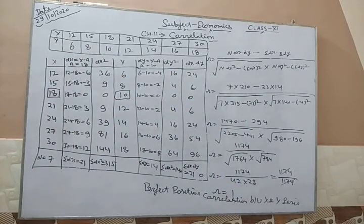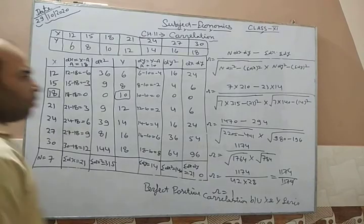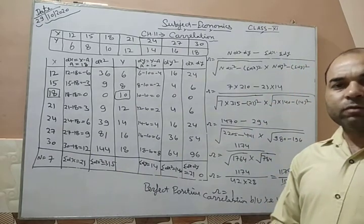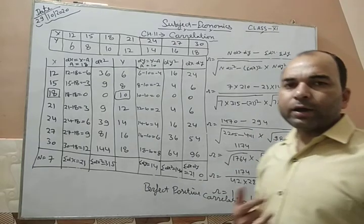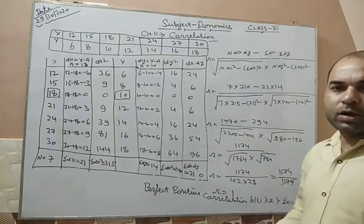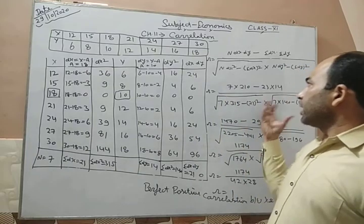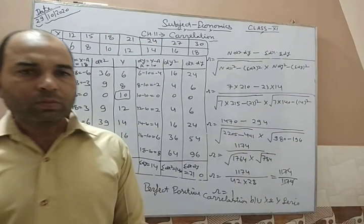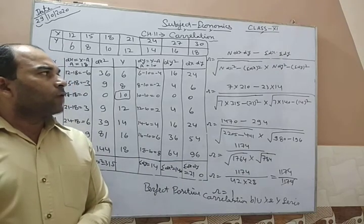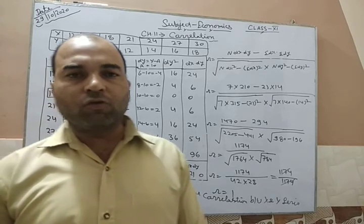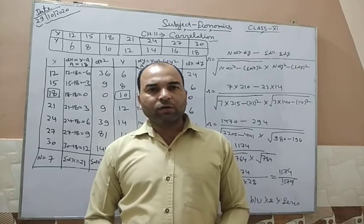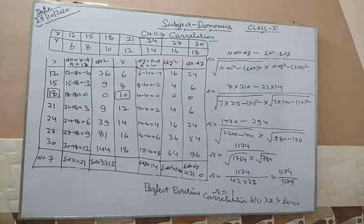I hope this is clear to all students. I have done only one question here. The calculation below is basic arithmetic — multiply, minus, add, and open square root — which you should already know. The formula just needs to be learned and all products applied as I have shown. So this is sufficient for today. Only one topic is left from this chapter: calculating the coefficient of correlation by the step deviation method. Thank you so much. I hope you can easily understand from this video.